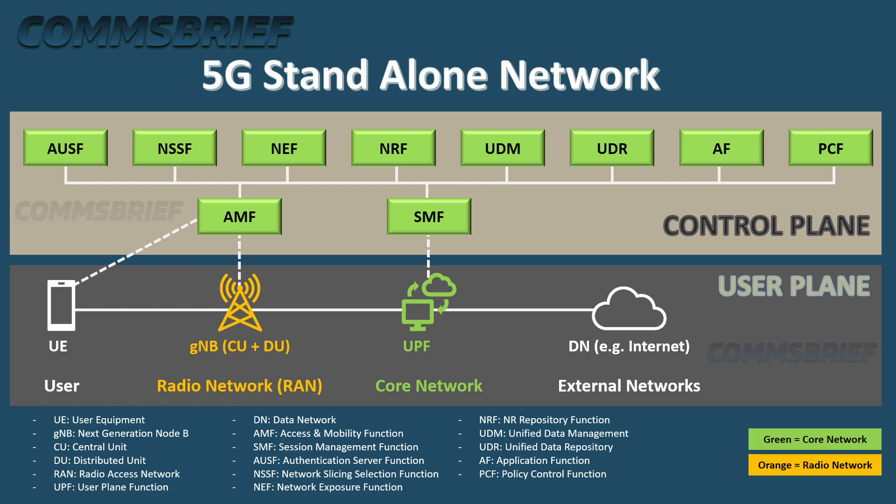AMF, or access and mobility management function, is part of the control plane. It is connected to the gNB and provides access and authentication. The network slice selection function (NSSF) determines which AMF or AMFs can serve a particular UE based on the service type the UE is trying to access.